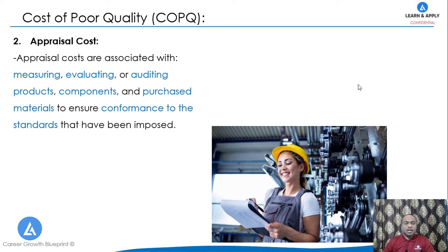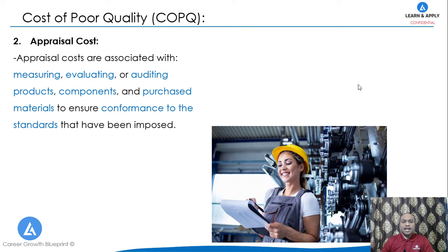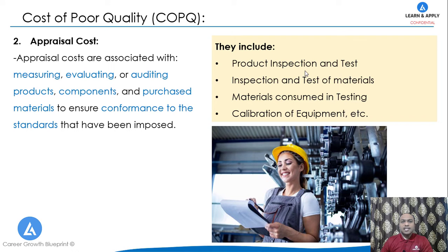The second cost of quality is appraisal cost. Appraisal costs are associated with measuring, evaluating, or auditing products and components as well as purchased materials to ensure conformance to specified standards. For example, these costs include product inspection and testing, inspection and testing of incoming and outgoing materials, materials consumed in testing such as non-destructive testing, as well as calibration of equipment.